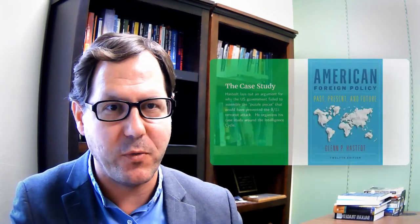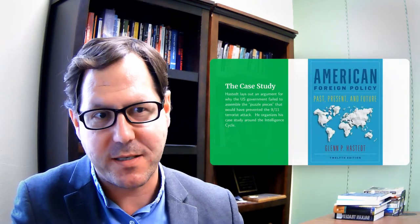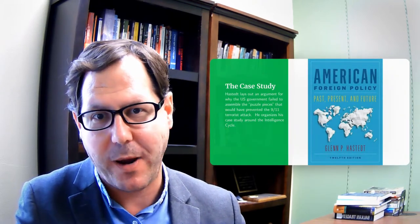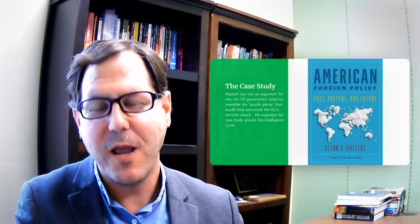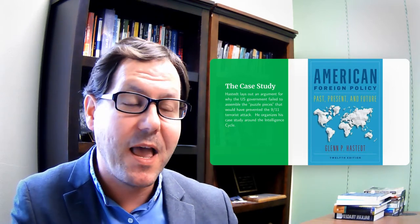I want to talk about the intelligence cycle, less in an abstract sense and more in an example sense. For that, I want to turn to Glenn Hastedt's book, American Foreign Policy: Past, Present and Future. This is the textbook I use when I teach U.S. foreign policy.